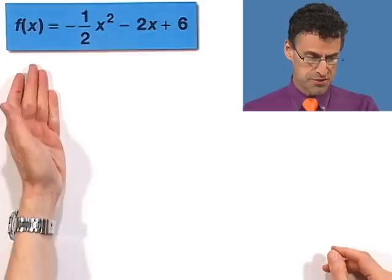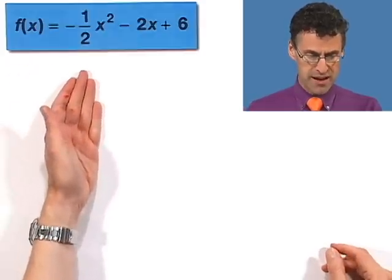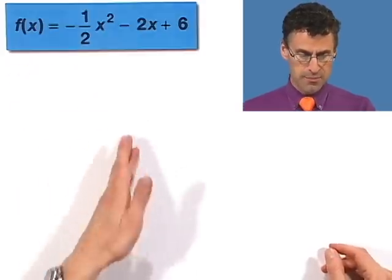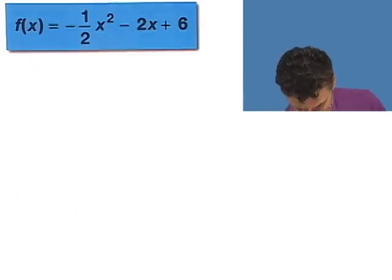We've been having fun graphing lots of parabolas. But now I want us to take a look at another question where we're going to be given a quadratic, asked to graph it, and focus on that wonderful, exciting turning point where all the action is — that's called the vertex. Here's the function I want us to graph: f of x equals negative one-half x squared minus 2x plus 6.